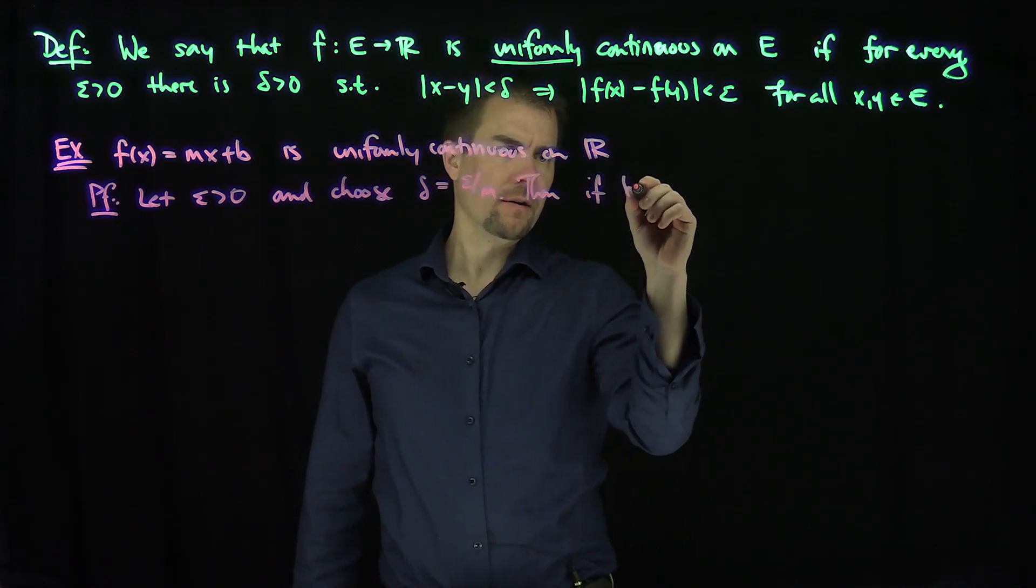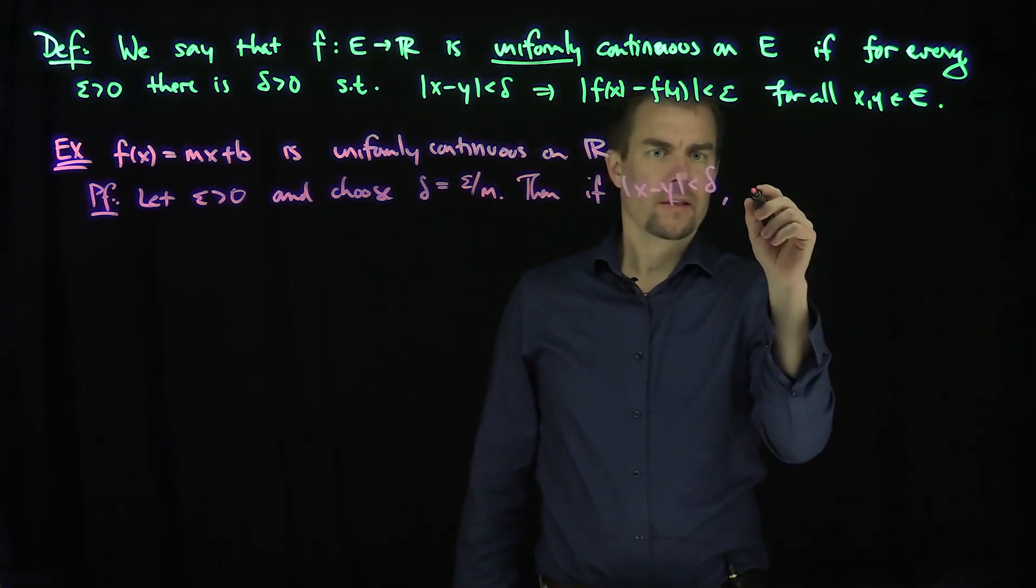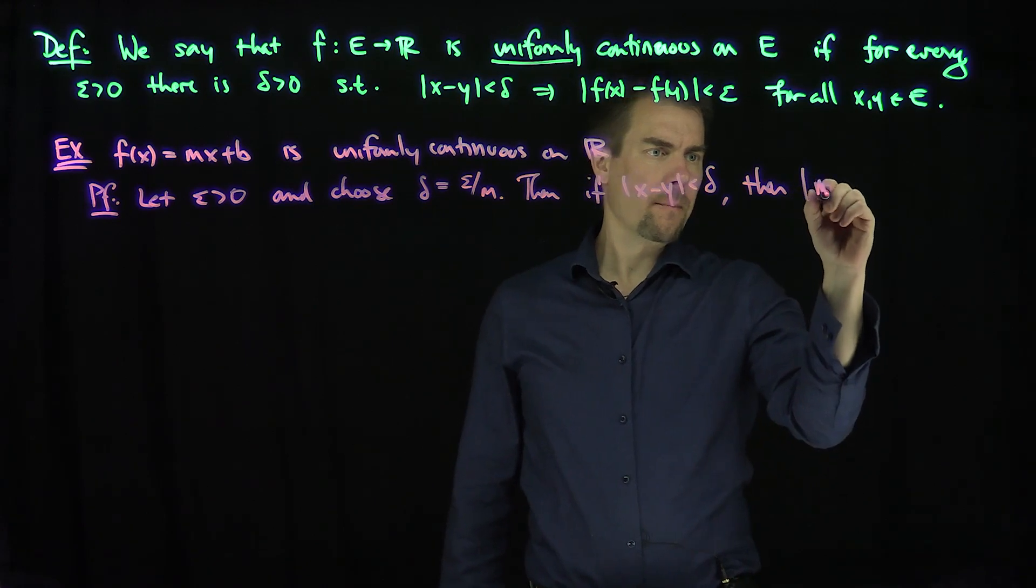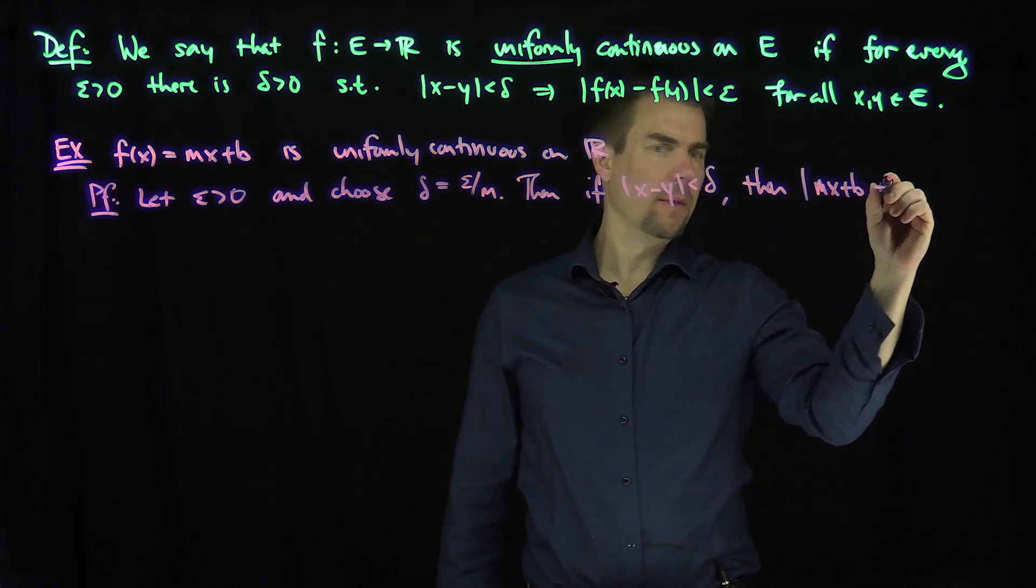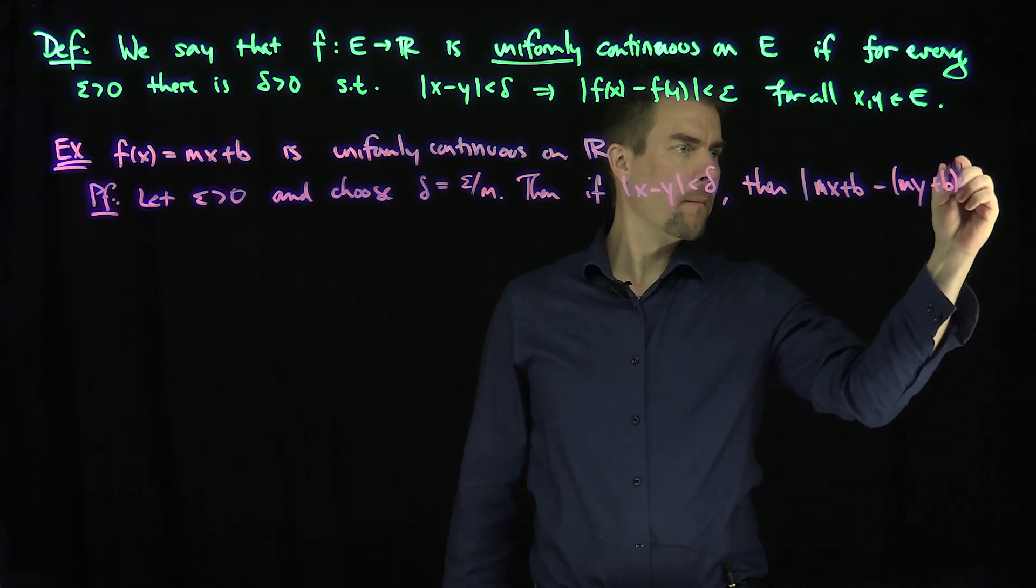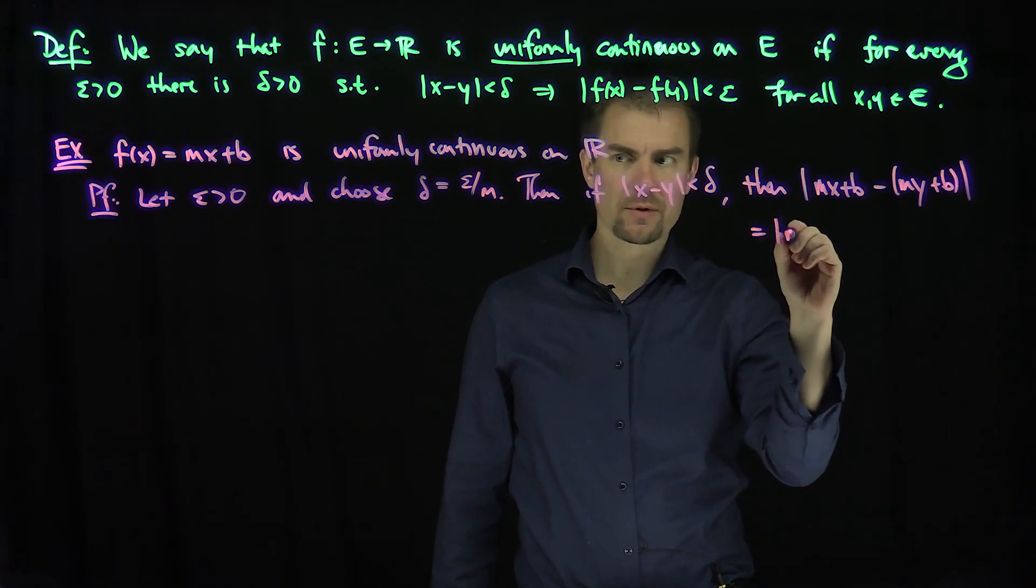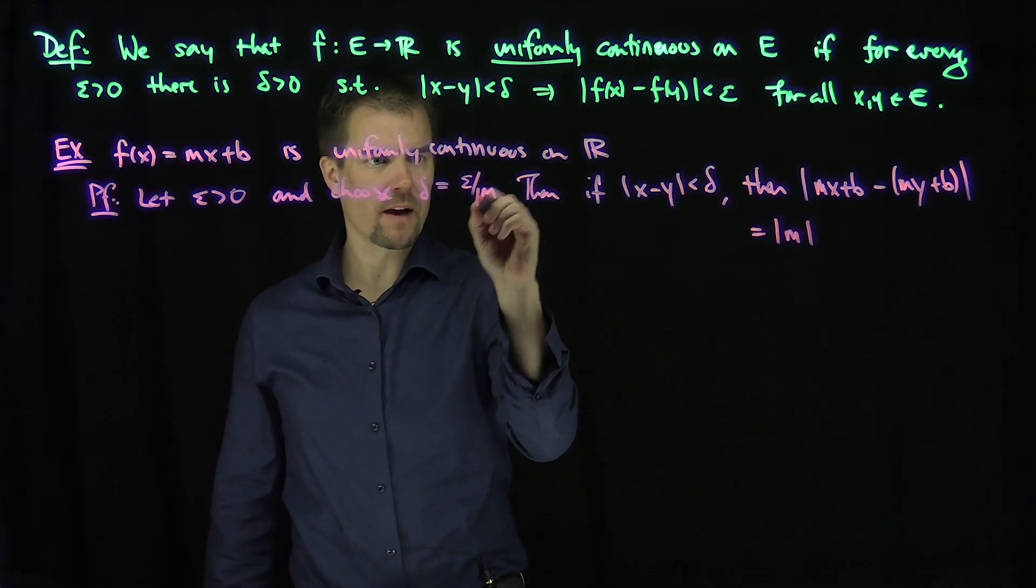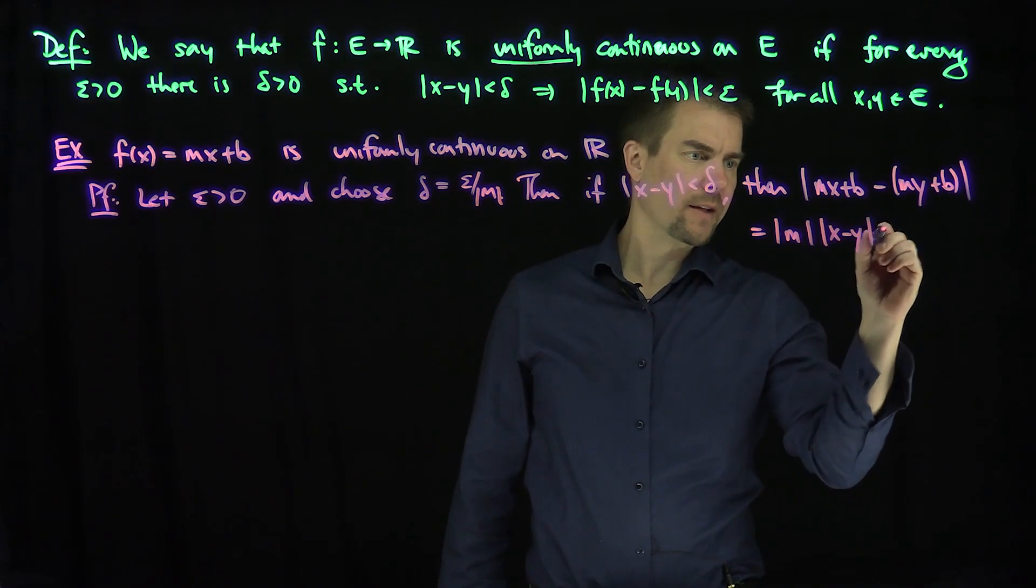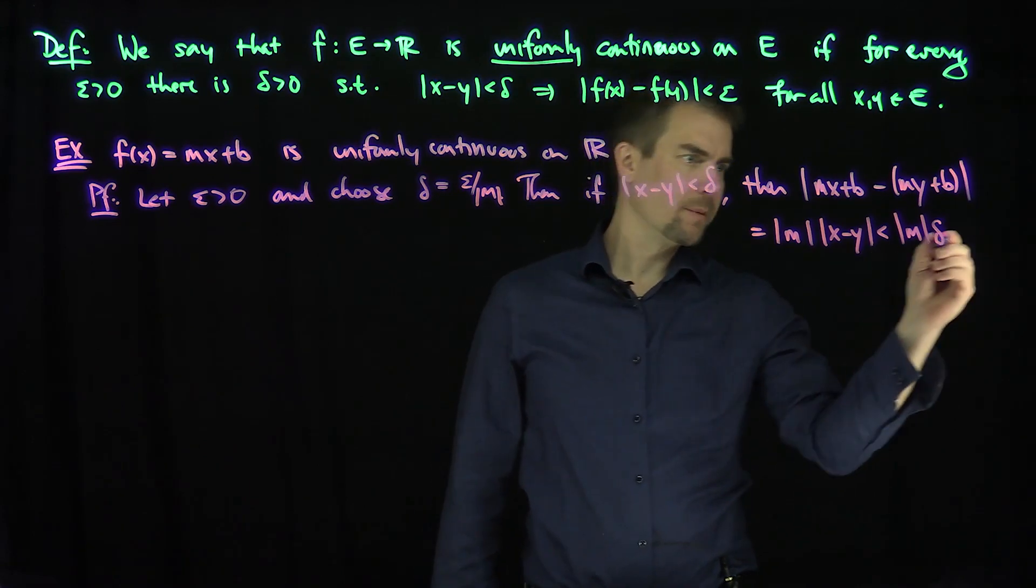Then, if x minus y is less than delta, then mx plus b minus my plus b is exactly equal to absolute value of m times x minus y, and that's less than m times delta, and that of course is just going to be epsilon.